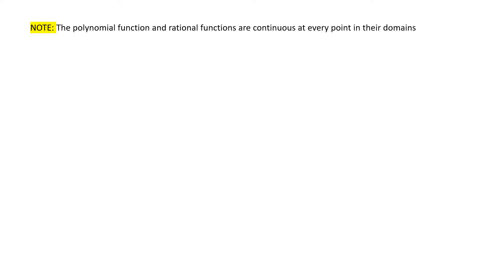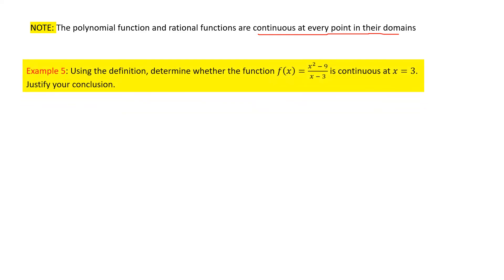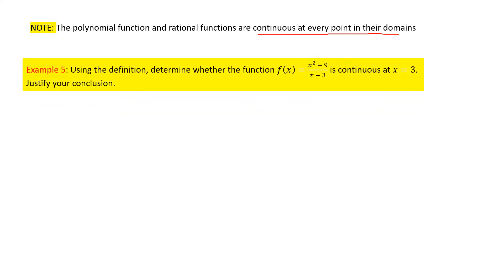An important note: if a polynomial function or a rational function is given, both are continuous at every point in their domain. This is true for all polynomial and rational functions. For example, using the definition, determine whether f(x) equal to x squared minus 9 divided by x minus 3 is continuous at x equal to 3.